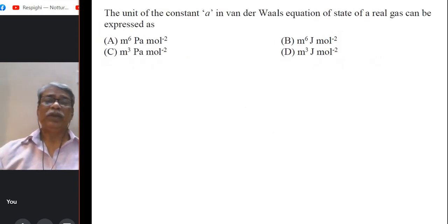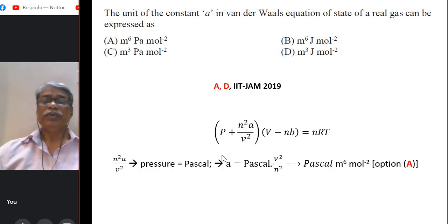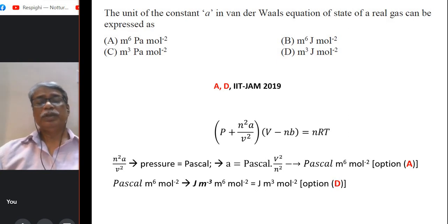The unit of the constant a, Van der Waals constant for real gas can be expressed as. Let us start from the Van der Waals equation itself and as you know this is the Van der Waals equation. So from dimension or unit consideration you know that term by term. So n²a/V², the whole term should be equal in dimension to P. So that means the n²a/V² should be pressure unit or Pascal. So a is Pascal × V²/n². So V² in SI is meter⁶ and n² gives you mole⁻². That means option A is the right one but which one is the other option. Now Pascal can be expressed as joules per meter cube. So we just put it to get the option D, joules meter³ mole⁻². So we see A and D are the right options.